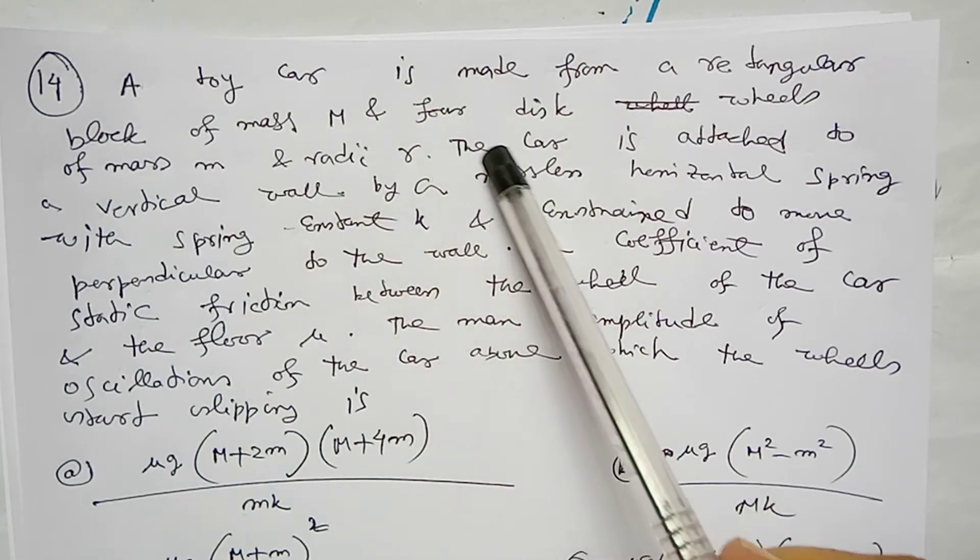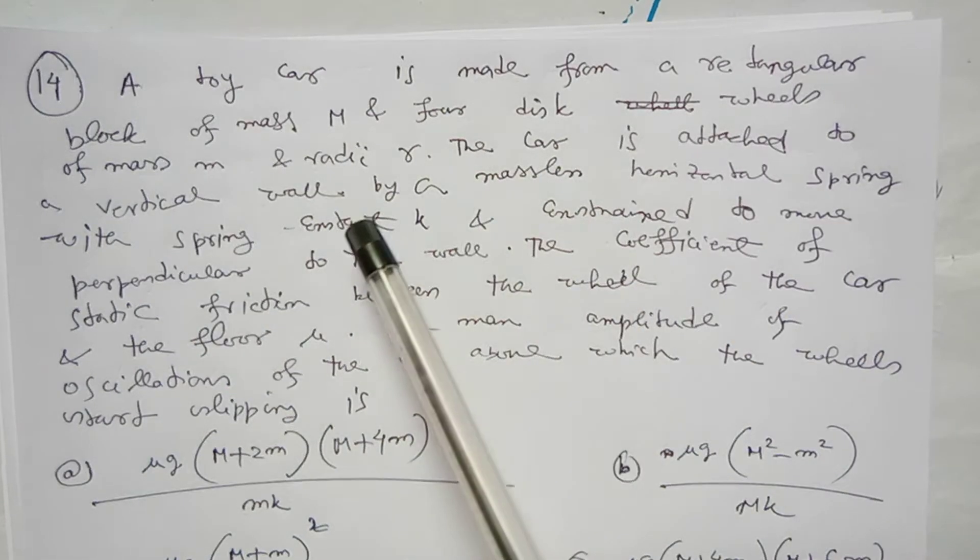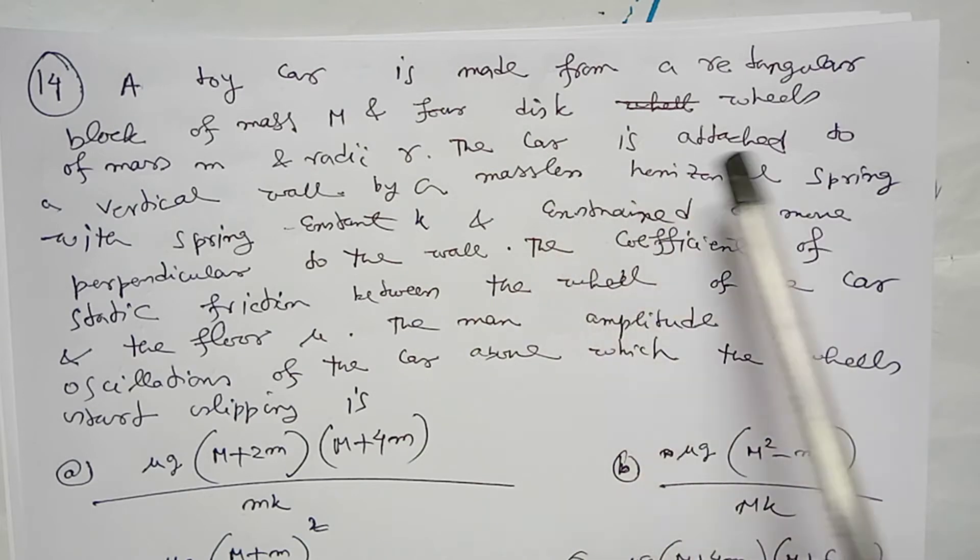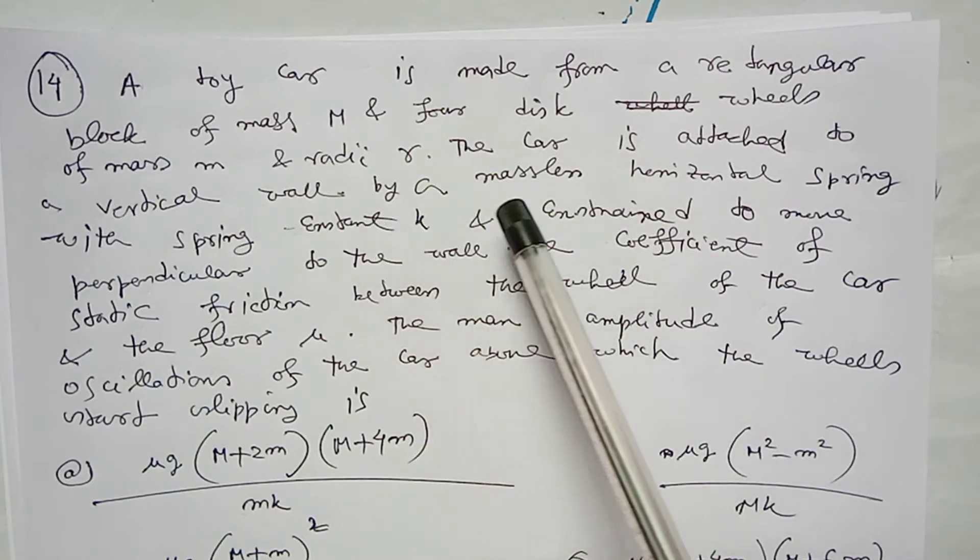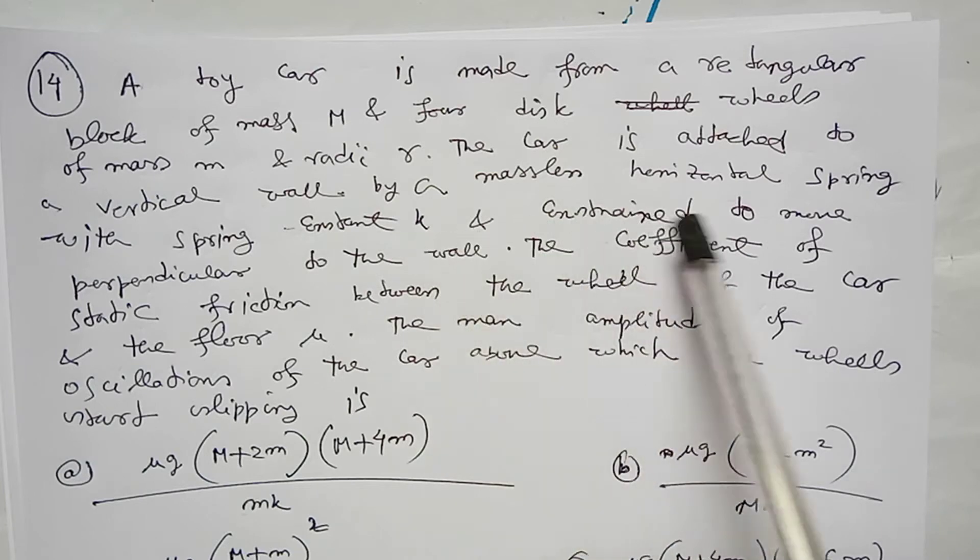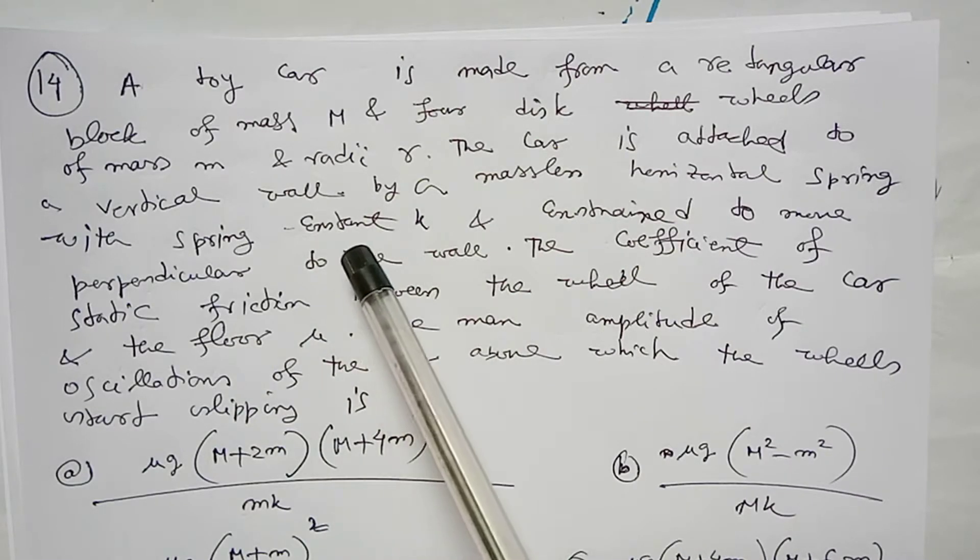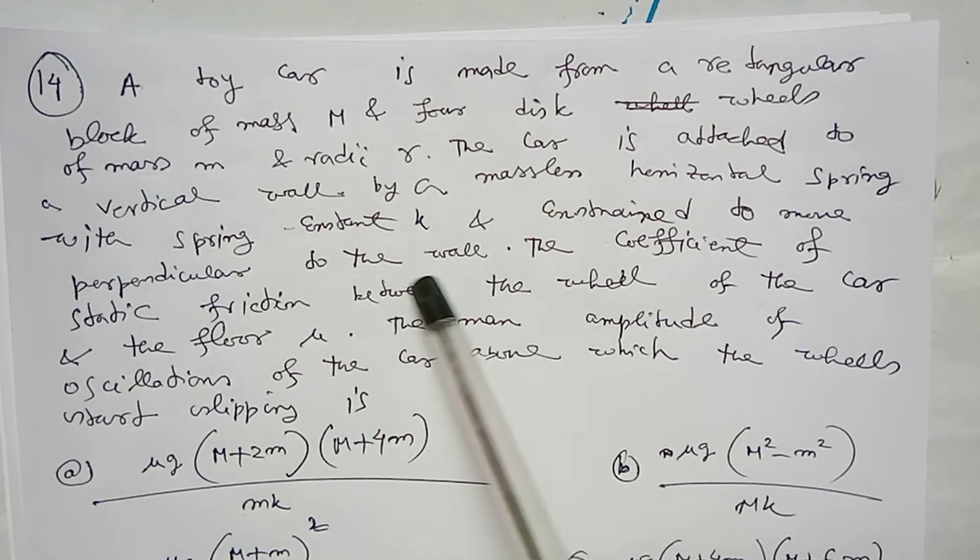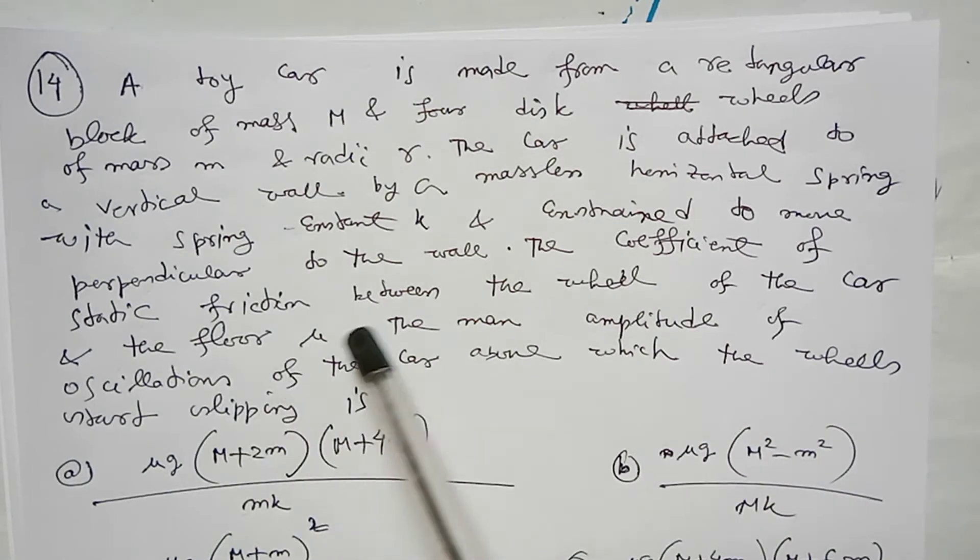In the problem, a toy car is made from a rectangular block of mass m and four discs wheels of mass m and radius r. The car is attached to the vertical wall by a massless horizontal spring with spring constant k, perpendicular to the wall. The coefficient of static friction between the wheel of the car and the floor is mu. We need to find the maximum amplitude of oscillation of the car above which the wheels start slipping.